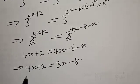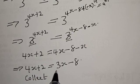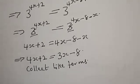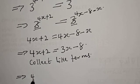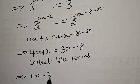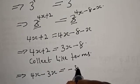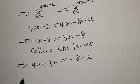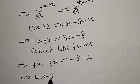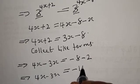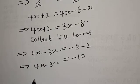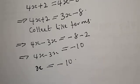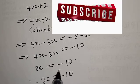Now let's collect like terms. This implies that 4X, if 3X crosses to the other side it becomes minus 3X, equal to minus 8, and if plus 2 crosses the other side it becomes minus 2. Then 4X minus 3X equals minus 8 minus 2, which is minus 10. Therefore our final answer is X equals minus 10. That is the value of X.